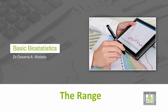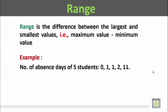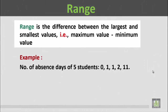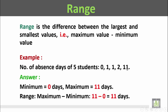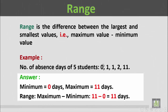The range is the difference between the largest and the smallest values, that's to say between the maximum value and the minimum value. For example, the number of absence days of five students was 0, 1, 1, 2, and 11. The minimum is 0 days while the maximum is 11 days.